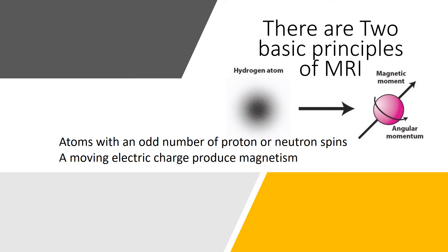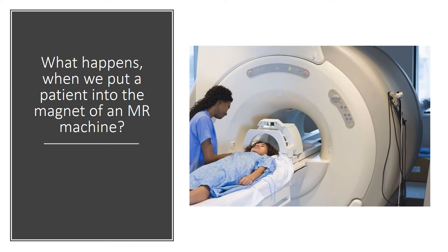There are two basic principles of MRI: atoms with an odd number of proton or neutron spins, and a moving electric charge produces magnetism. What happens when we put a patient into the magnet of an MR machine?